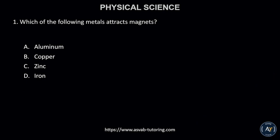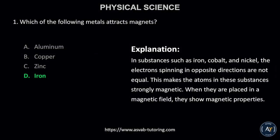Number 1. Which of the following metals attracts magnets? A. Aluminum, B. Copper, C. Zinc, or D. Iron. The correct answer is D. Iron.